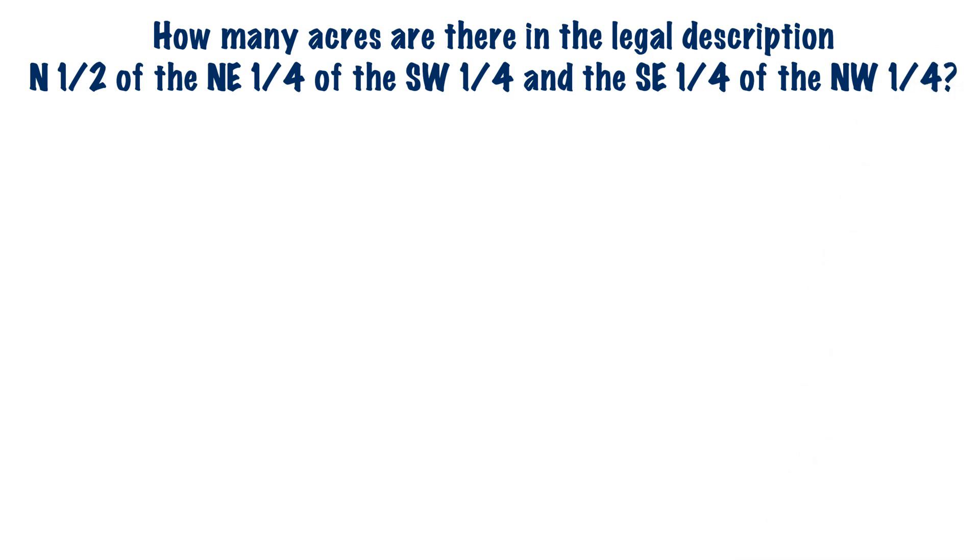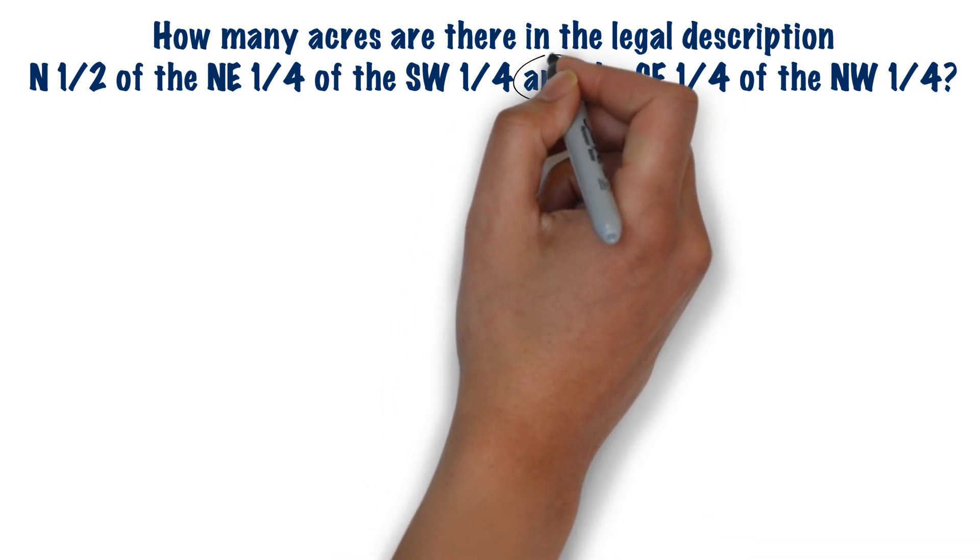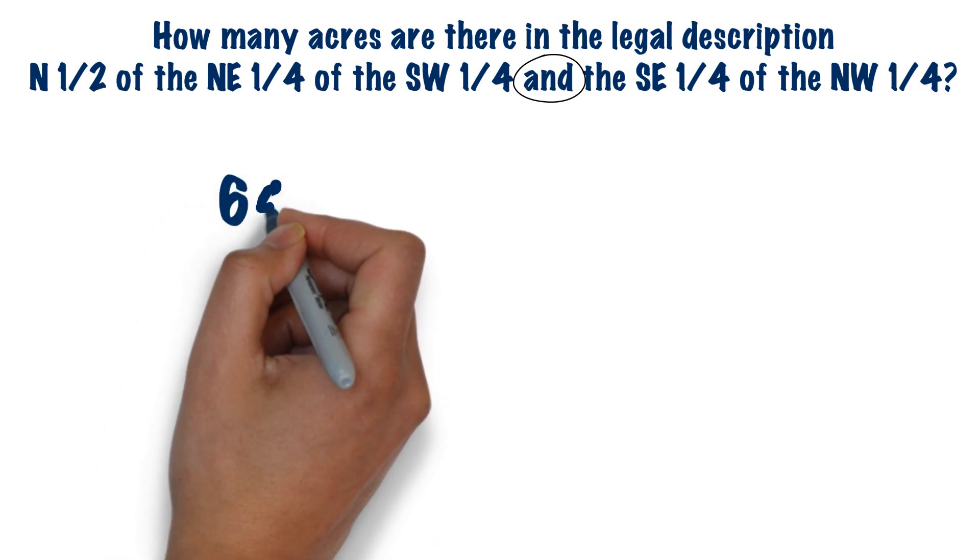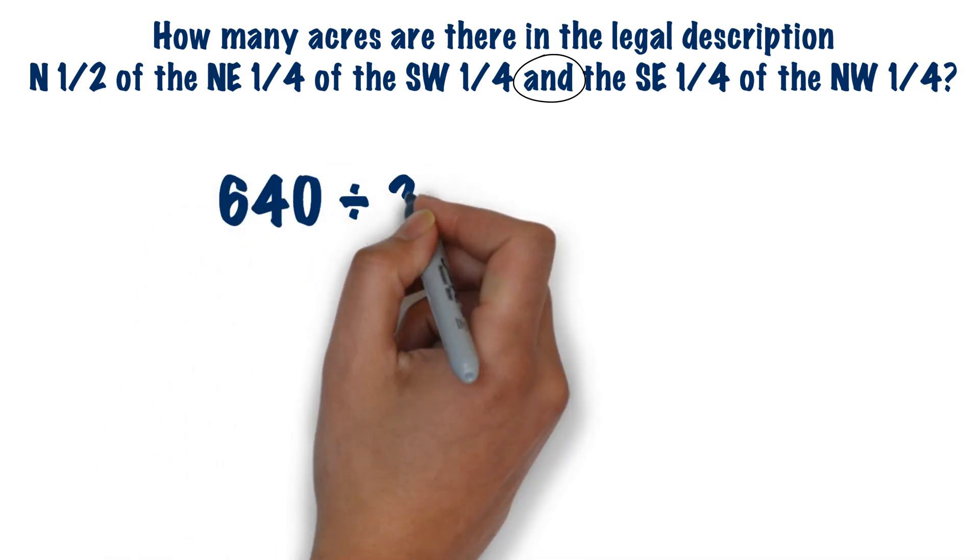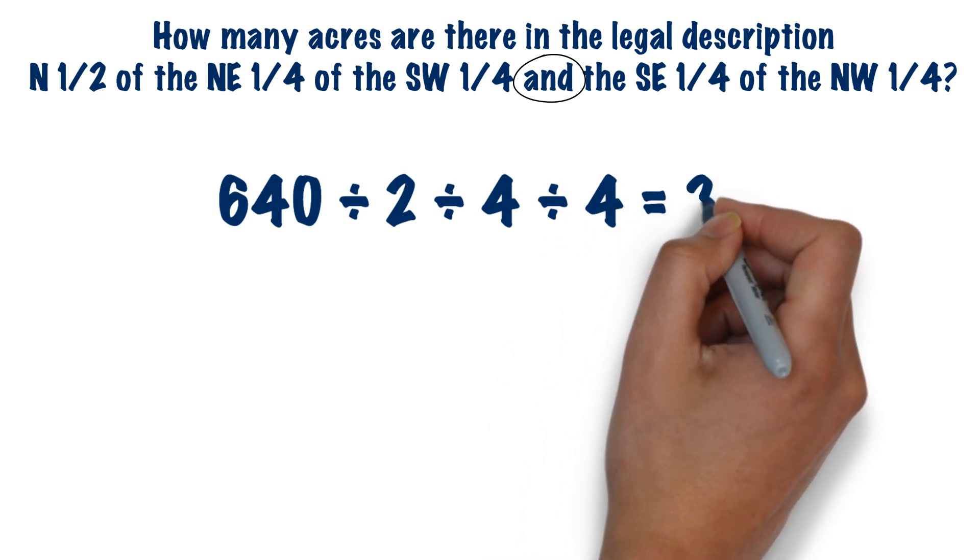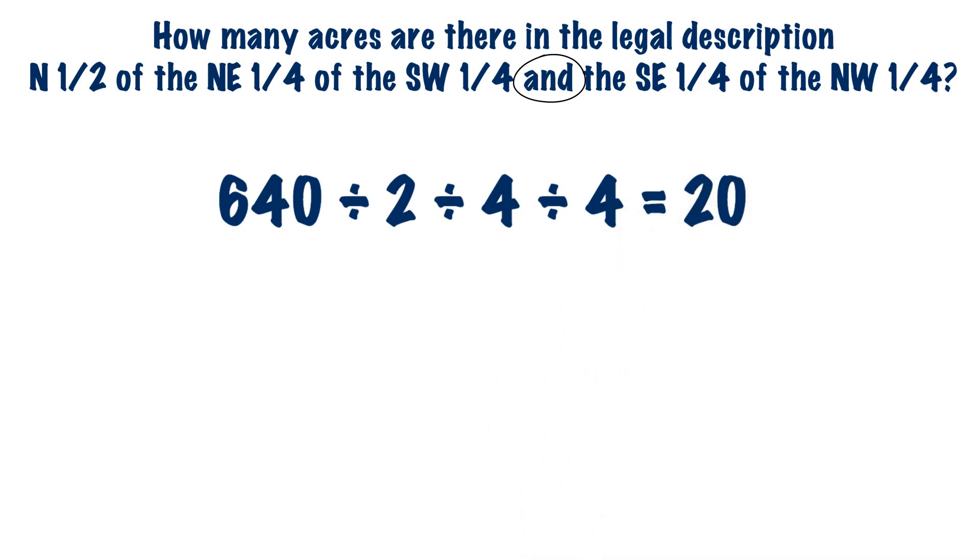The most important thing to remember here is that when you see the word and, you remember that you must calculate the acres before the and and after the and and then add them together. For this example, we take 640, we divide by 2, divide by 4, divide by 4 to get 20.